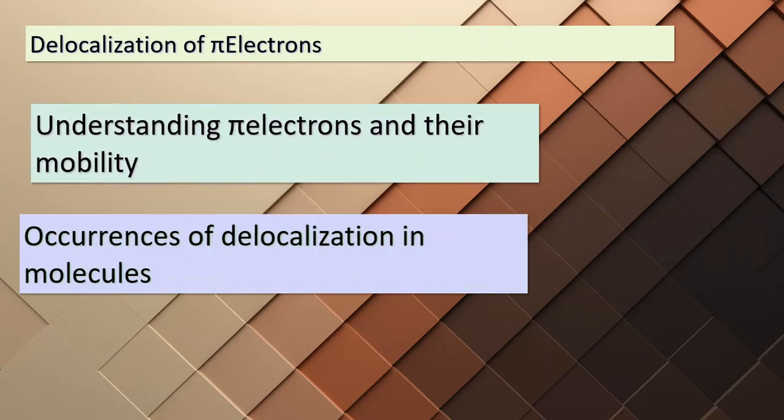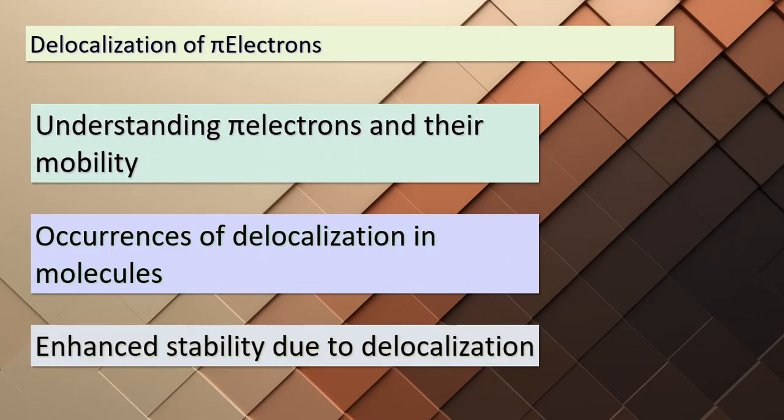Our exploration takes us to the concept of delocalization of pi electrons. Imagine pi electrons as a cloud of electrons that isn't bound to a single bond but rather stretches across multiple adjacent atoms. This phenomenon is known as delocalization, and it brings about some intriguing effects. Delocalization can occur in molecules with multiple bonds, especially in cases where there's resonance. This phenomenon enhances the stability of molecules, making them less prone to reactive behavior. One classic example is the benzene ring, where delocalization of pi electrons creates a ring of enhanced stability.